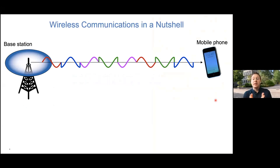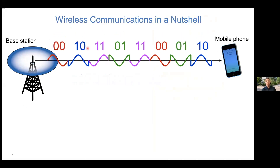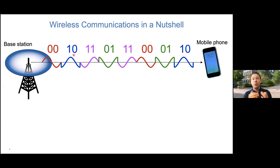Wireless communication in a nutshell is the concept of sending something from one place to another - from the base station to a mobile phone, for example. What we are sending is a sequence of bits, for example 0s and 1s. Every time we communicate, we divide our sequence of 0s and 1s into small segments that we transmit, mapping them onto different radio waves. Every time I'm transmitting 0,0, I send this red wave here - it has a particular shape. This shape tells me it's 0,0 being transmitted.